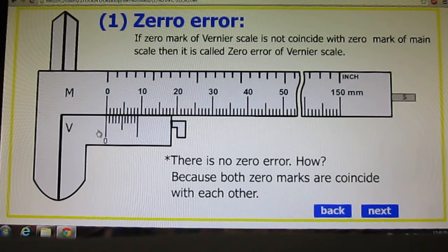This is the Vernier scale, this is the zero mark and it should be aligned with main scale zero. So in this case there is no zero error. Why? Because both zero marks coincide with each other. Here again you can see.